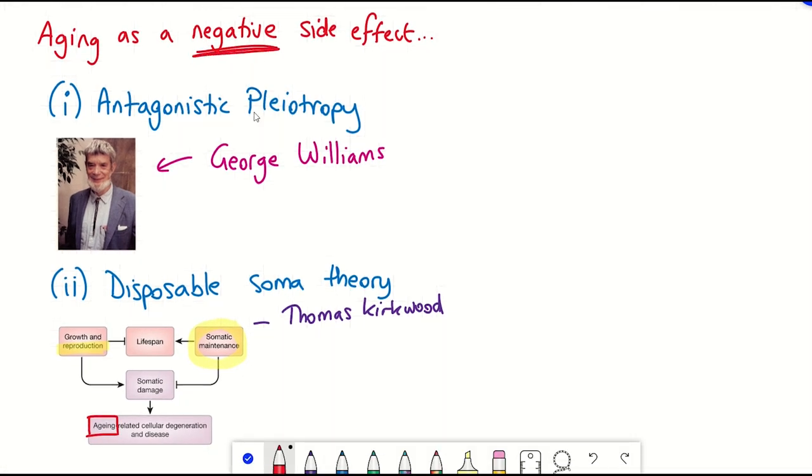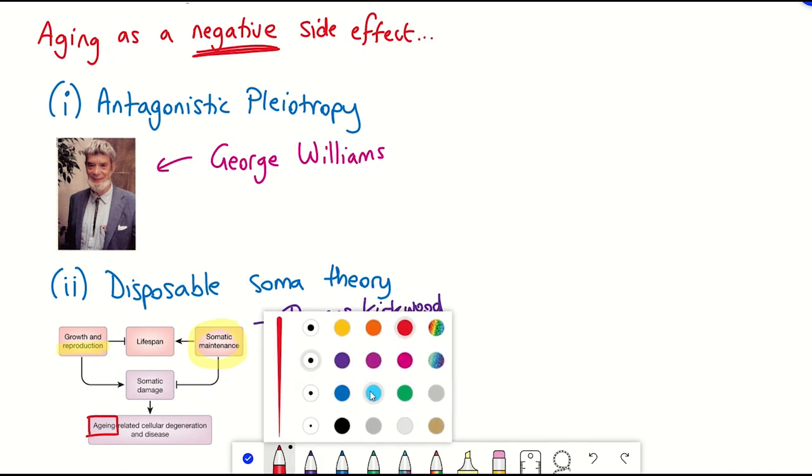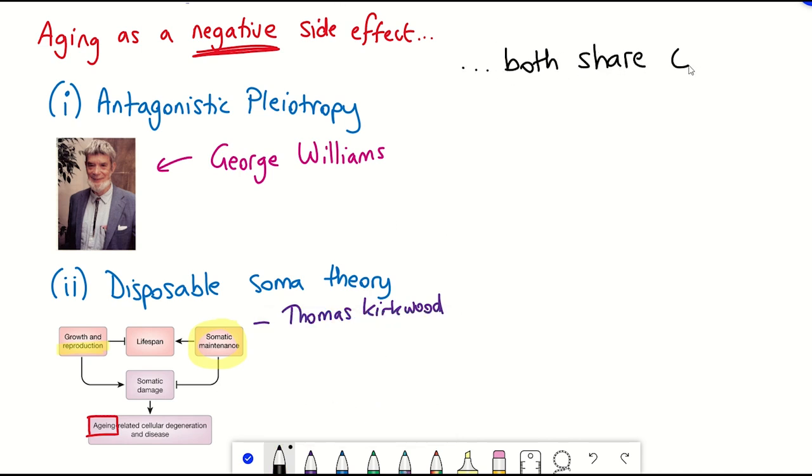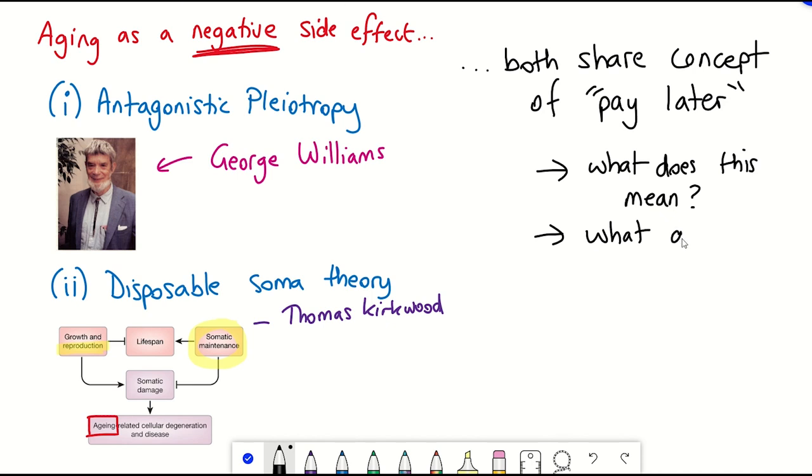Now you may be listening and thinking, yeah, this makes sense. But they both have their limitations, at least when you consider some of the current observations that we can see in nature. Firstly, they both suggest some sort of pay later in terms of there being a consequence of diverting or using resources for reproduction. But what does this really mean? Is it in terms of energy intake or a lack of resources?